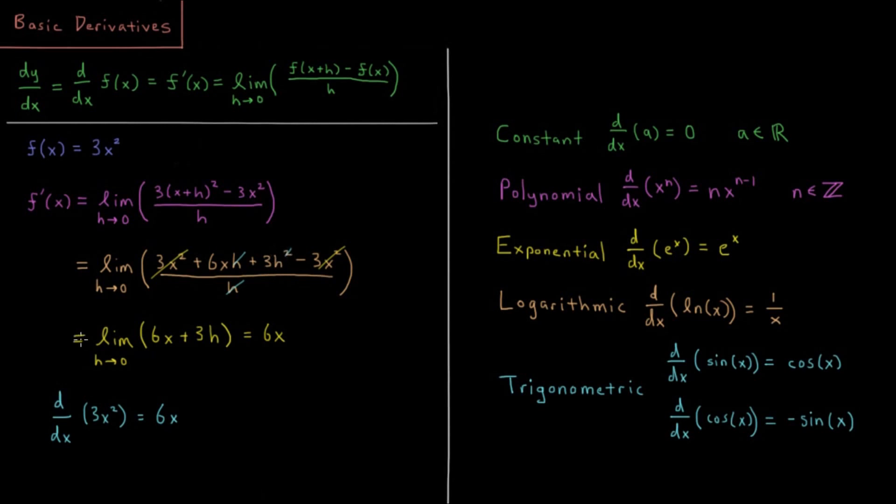So here, I'm down to taking the limit as h goes to 0 of 6x plus 3h. So that limit is just this term goes to 0, and this term stays the same. So that limit evaluates to 6 times x.